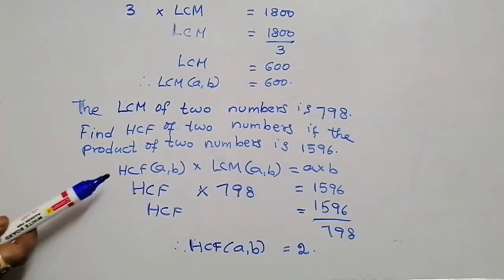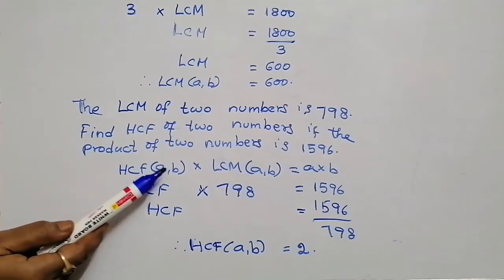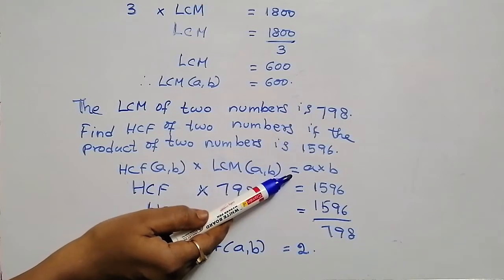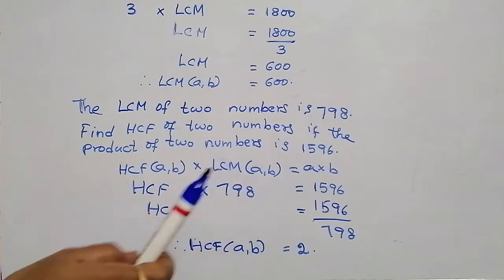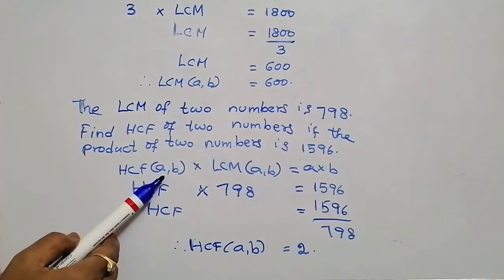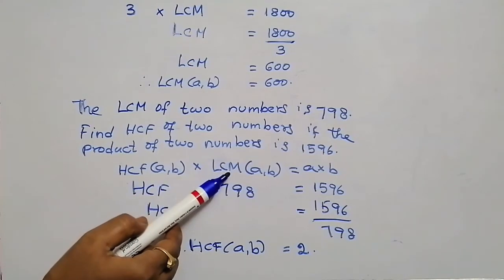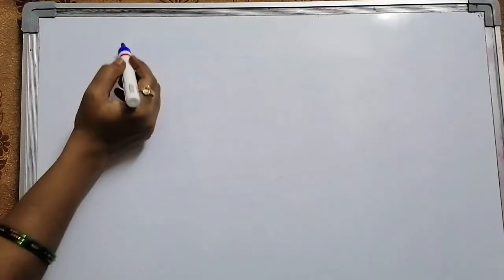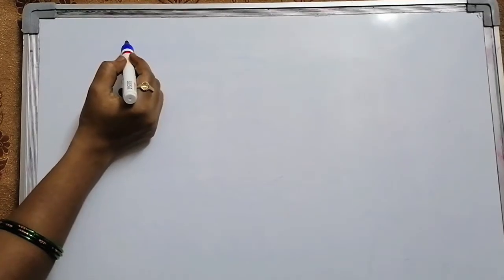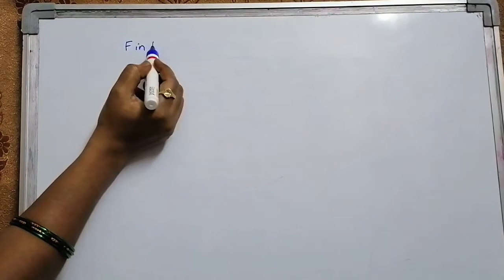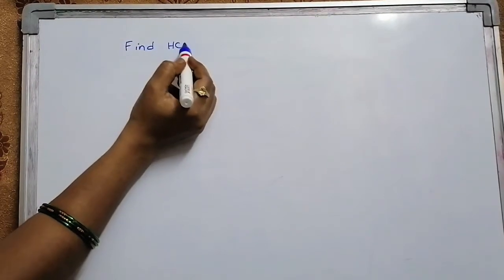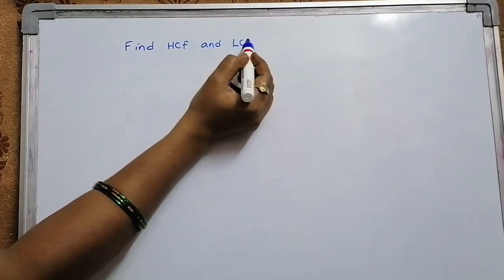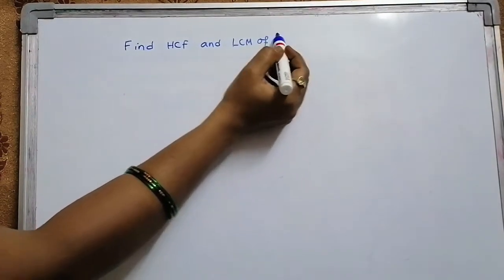In this way, by using the formula — HCF of A, B into LCM of A, B is equal to A into B — this means that HCF of two numbers into LCM of two numbers is equal to product of two numbers. Now comes the interesting part: finding HCF and LCM of fractions.